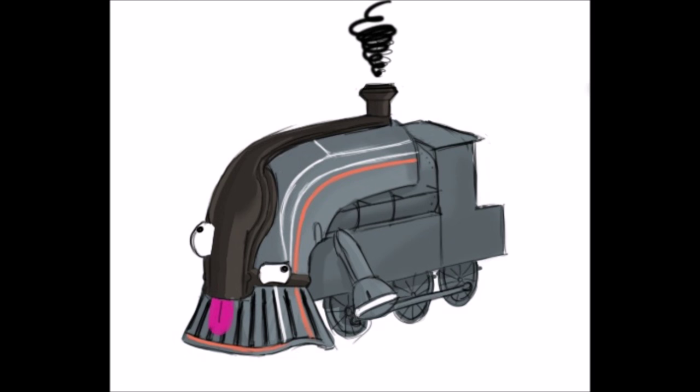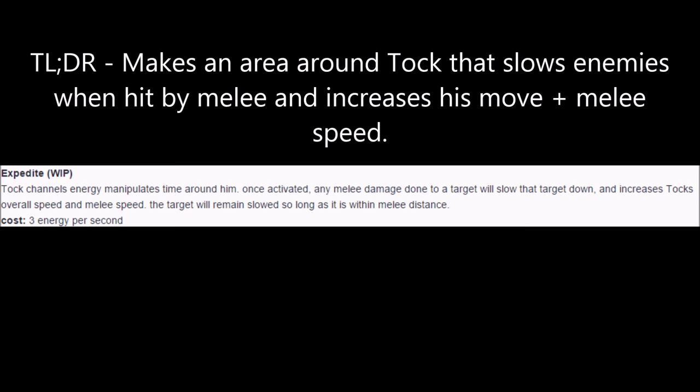TOC's second ability is Expedite. TOC briefly channels and creates an aura around himself. Any enemies in the aura that take melee damage are slowed, and increase TOC's movement and melee speed. Enemies that are meleed in the aura will remain slowed as long as they remain in the aura.